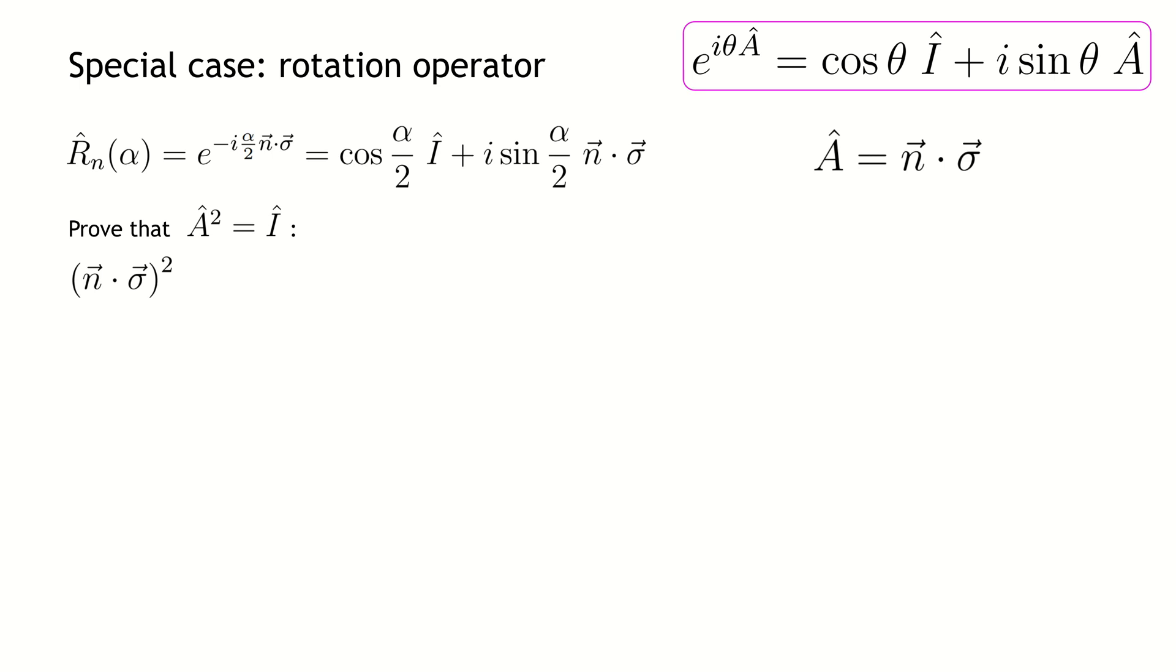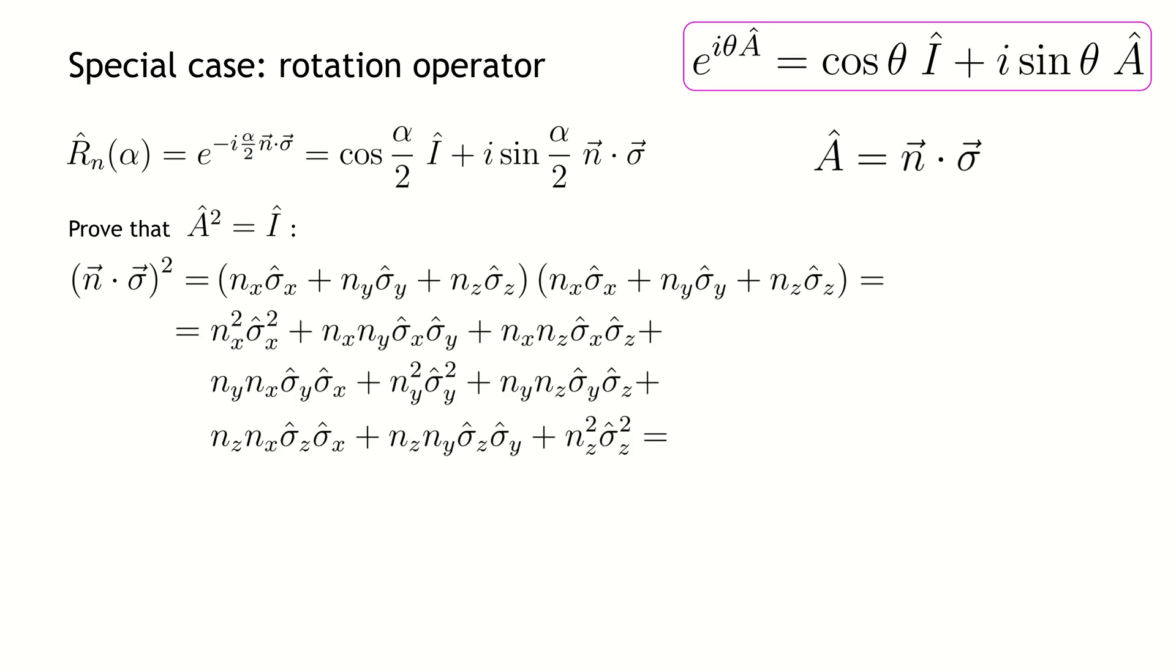First, let's calculate the squared operator and open the brackets. Squared Pauli operators give an identity matrix.